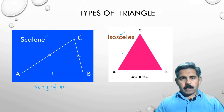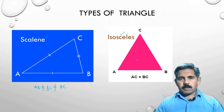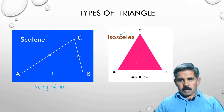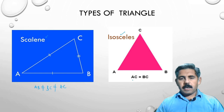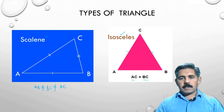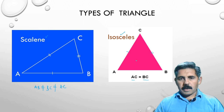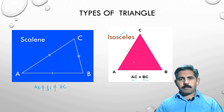The second type is the isosceles triangle, in which 2 sides are equal. Here, ac is equal to bc, and this side is also equal to ac. This triangle is an isosceles triangle.